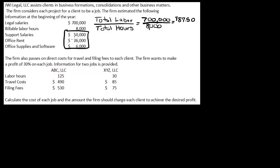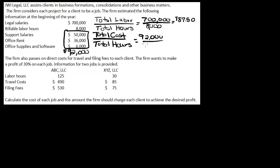If we add up the support salaries, the office rent, and the office supplies and software, we get $92,000. So now we need to calculate a rate for that as well — total cost divided by total hours. That's $92,000 divided by 8,000 hours, which gives us a rate of $11.50 per hour. So now we have our two rates: our labor rate and our indirect cost rate. We can use those two rates and apply them to our jobs.